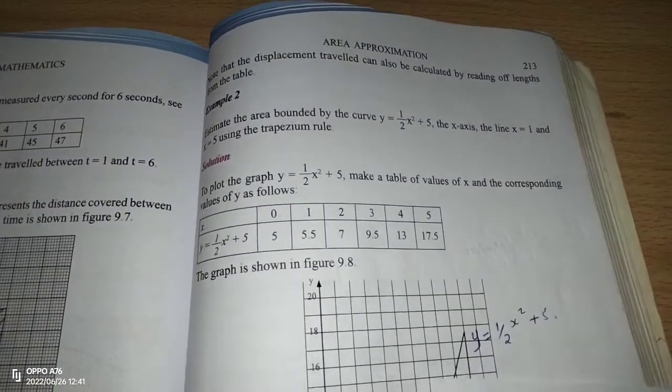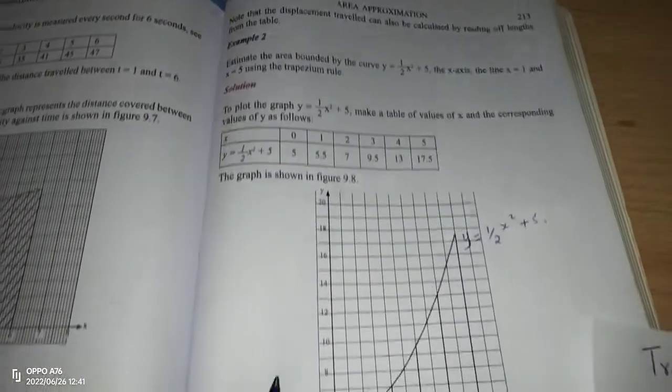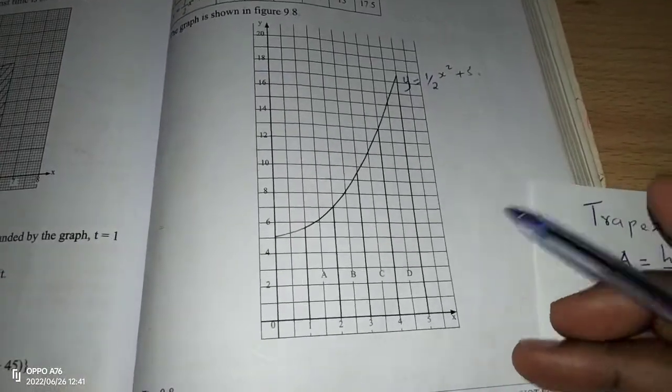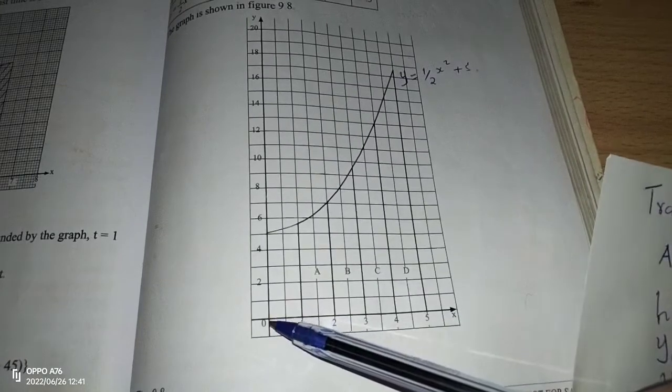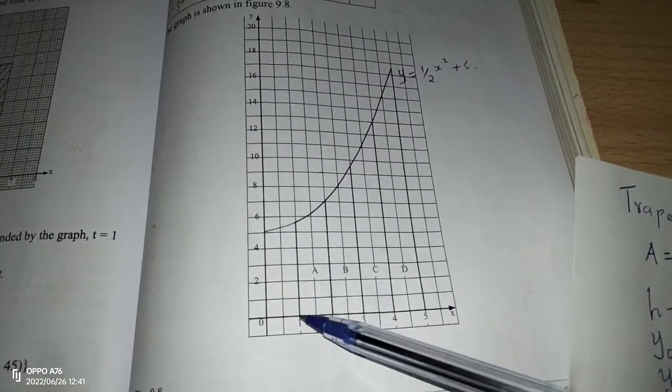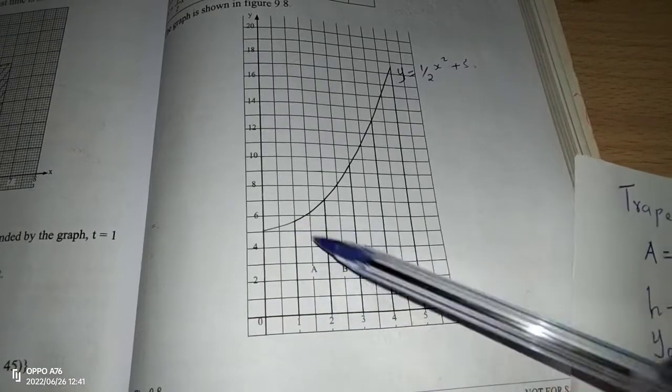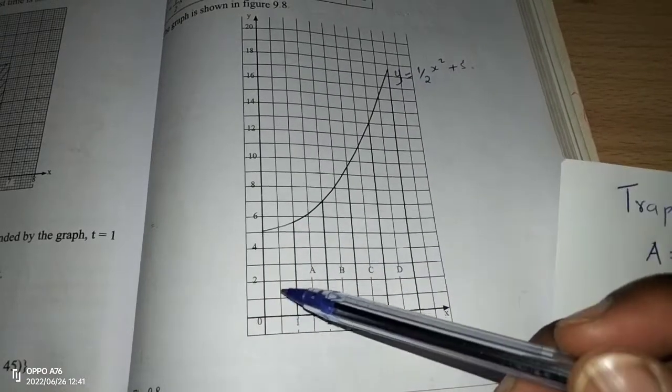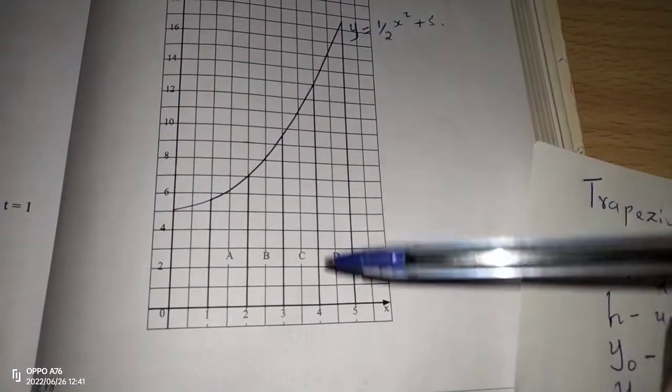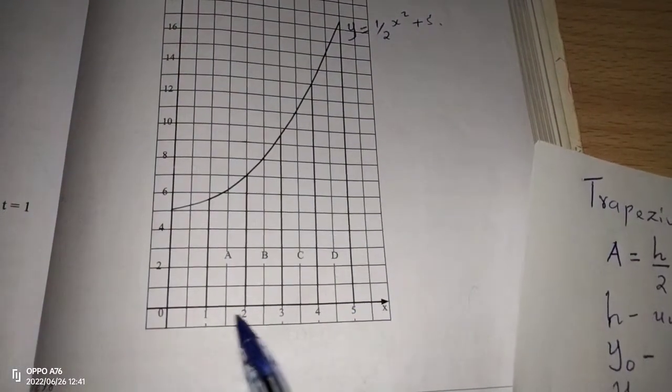Now after filling the table, we have a sketch of this curve. So the curve is going to appear this way. When x is 0, y is 5. When x is 1, y is 5.5, like that. So we have the area below this curve now, and we have the x-axis.